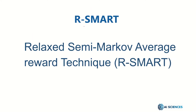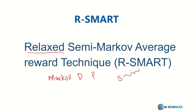The algorithm that we are going to use is RSMART. It is basically abbreviated as Relaxed Semi-Markov Average Reward Technique. We already know what a Markov Decision Process is — MDP. Basically, the process counts the average rewards or maybe discounted rewards, where only the current state decides about the future.